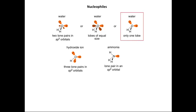Moving on to the hydroxide ion: on oxygen, we have three lone pairs, all in sp3 orbitals. In ammonia, we have just one lone pair, again in an sp3 orbital.